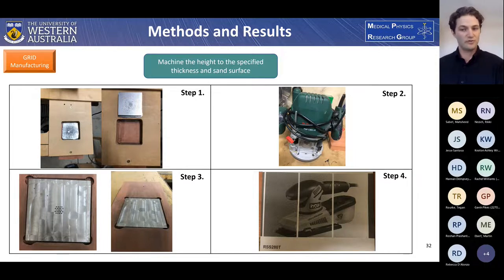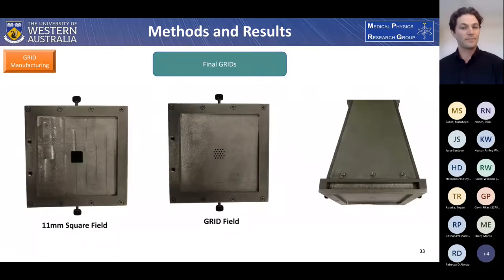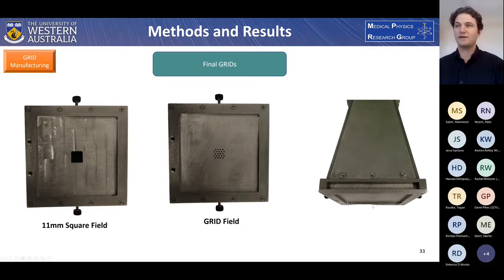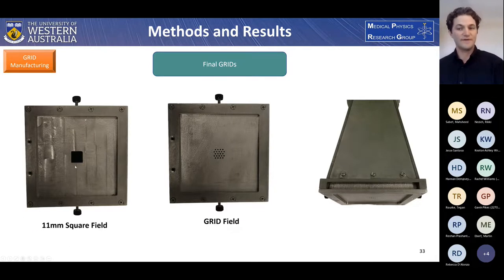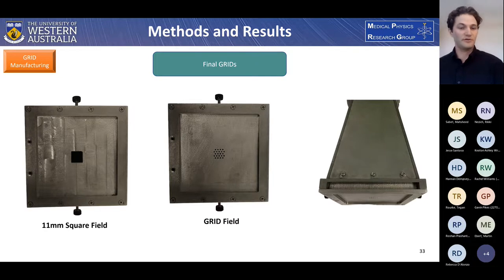Final finishing was performed using a sheet sander as the grid lay in a recessed hole. The final product shows the grid field inside the variable collimator. On the right, the thickness of the grid just allows it to fit into the slot, enabling a precise and repeatable setup. On the left, the 11 mm square field was produced so that the simulation geometry could be verified using a simpler geometry before starting with the full grid field.